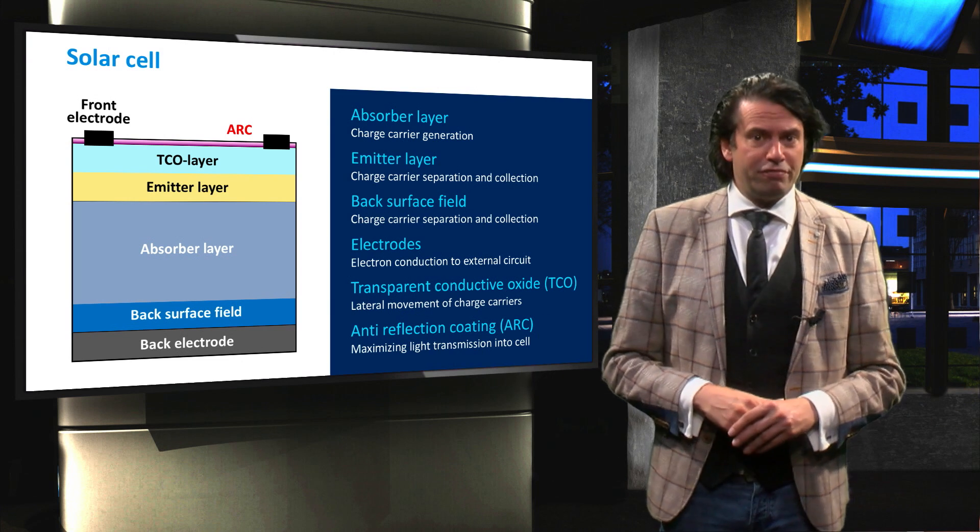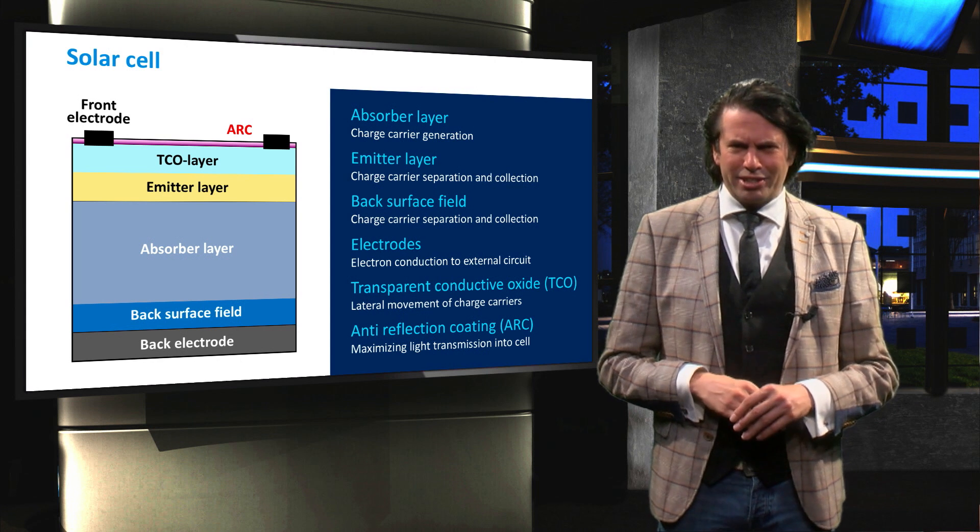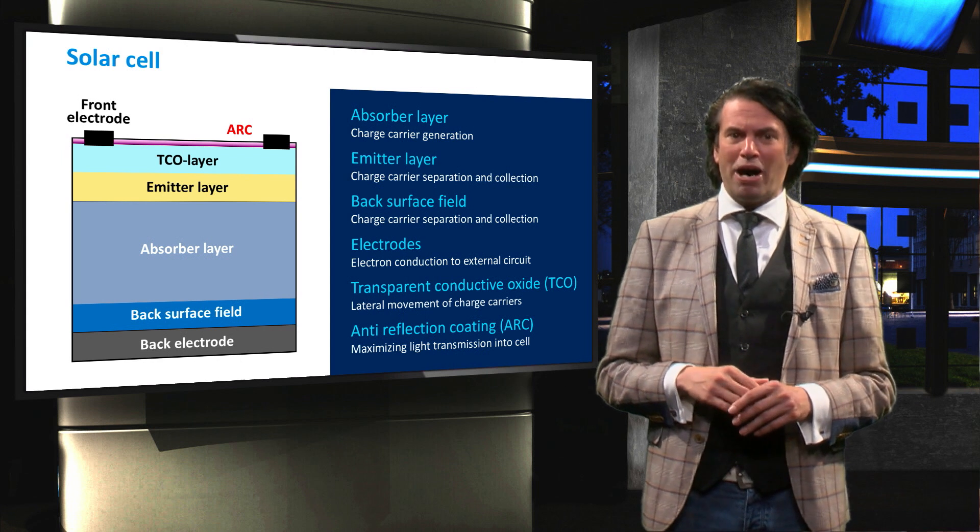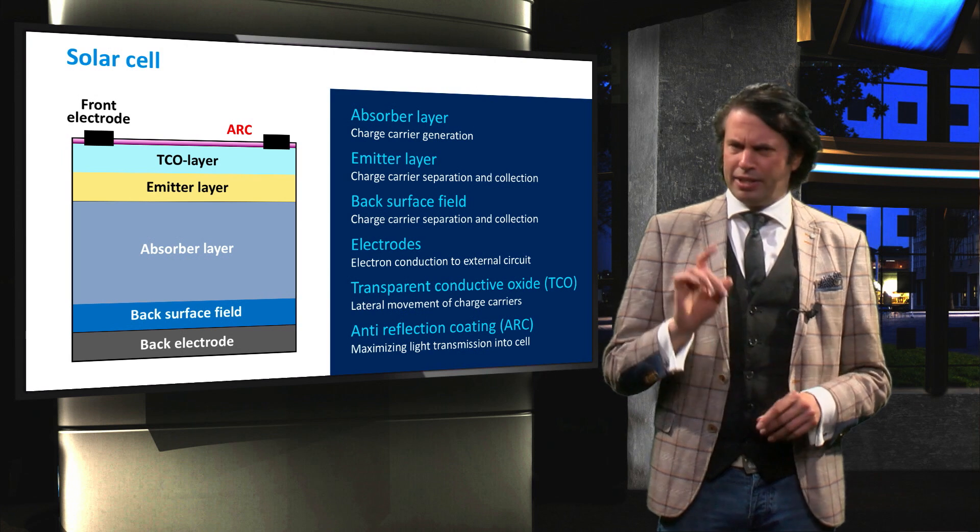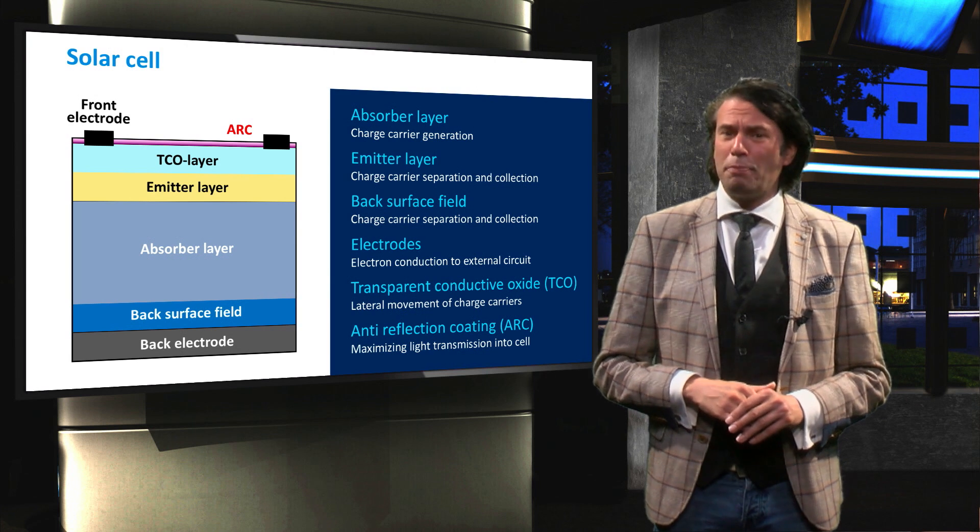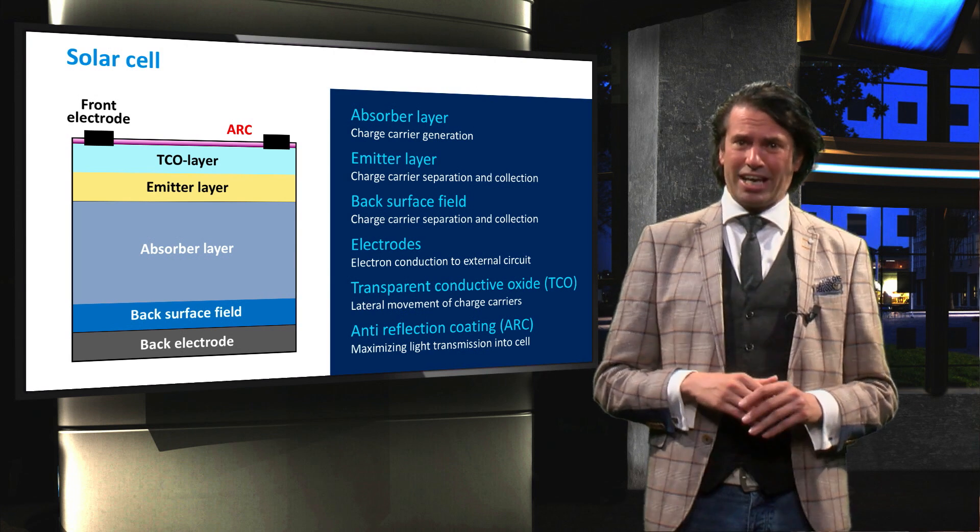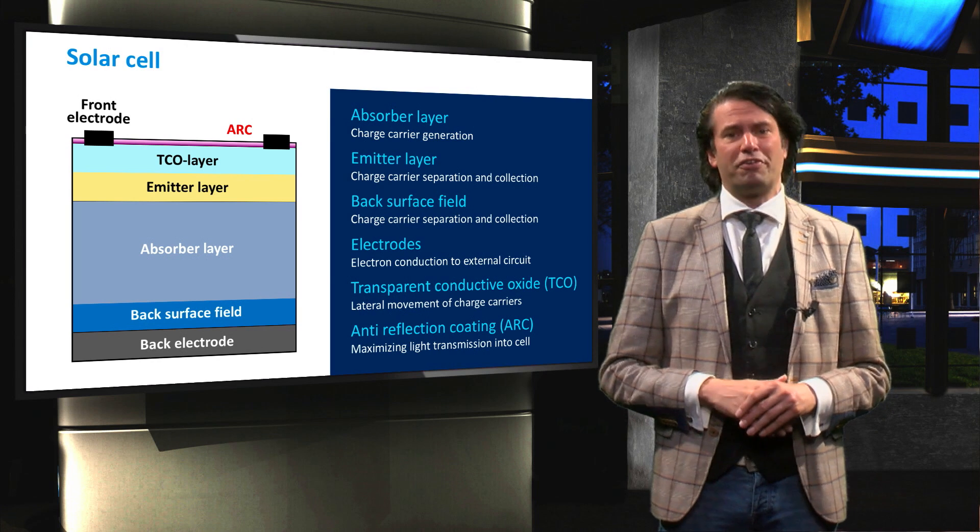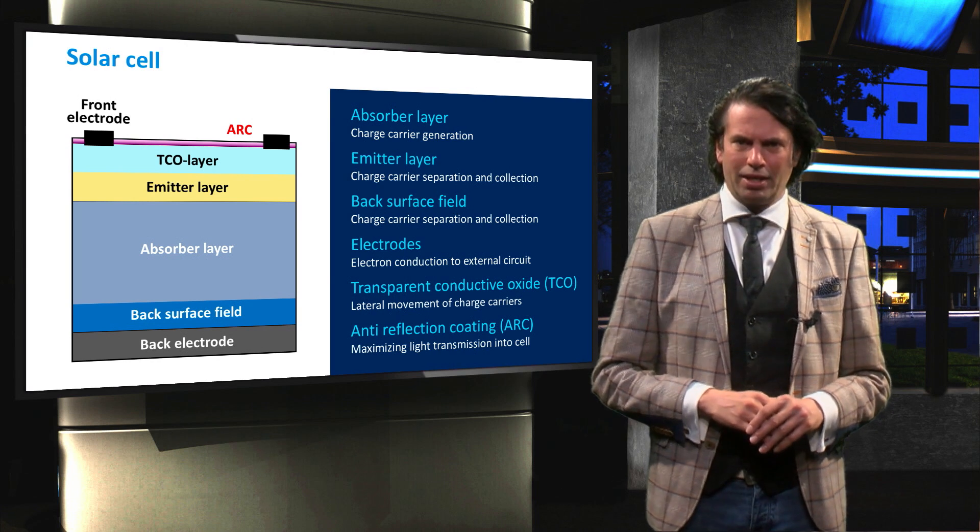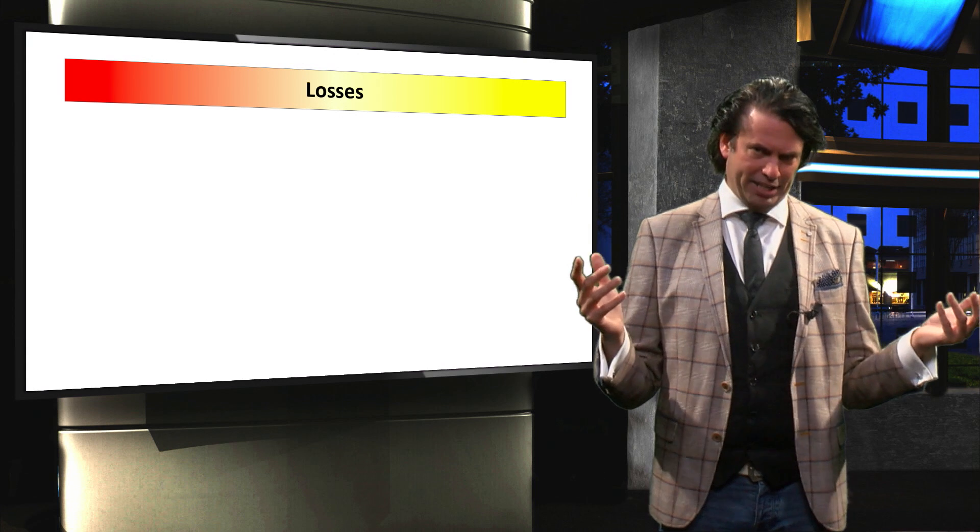As we have seen in the preceding video, the current record crystalline silicon solar cell efficiency of about 26.6% means that 73.3% of the incident energy is lost through various mechanisms. Let's take a look at these loss mechanisms.